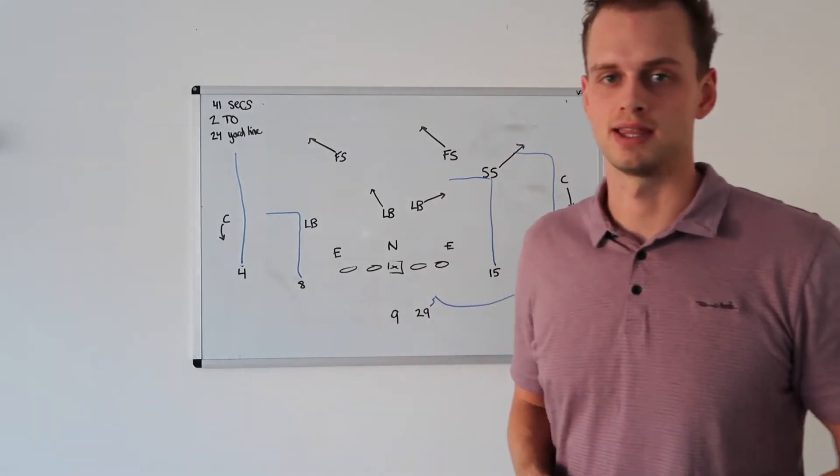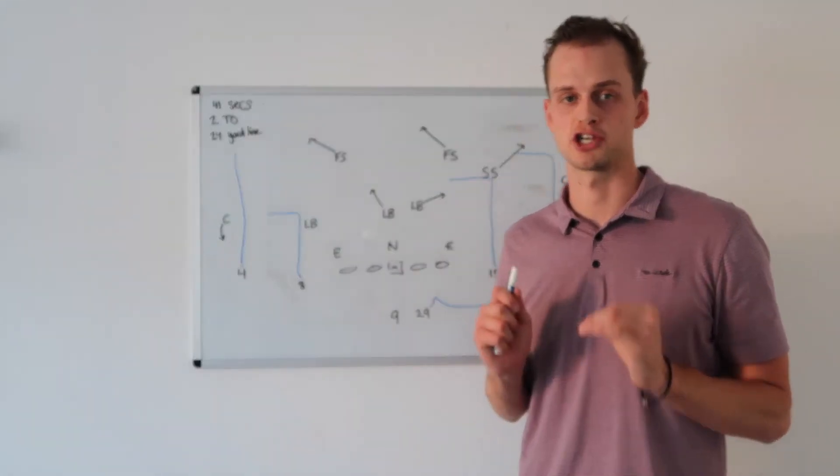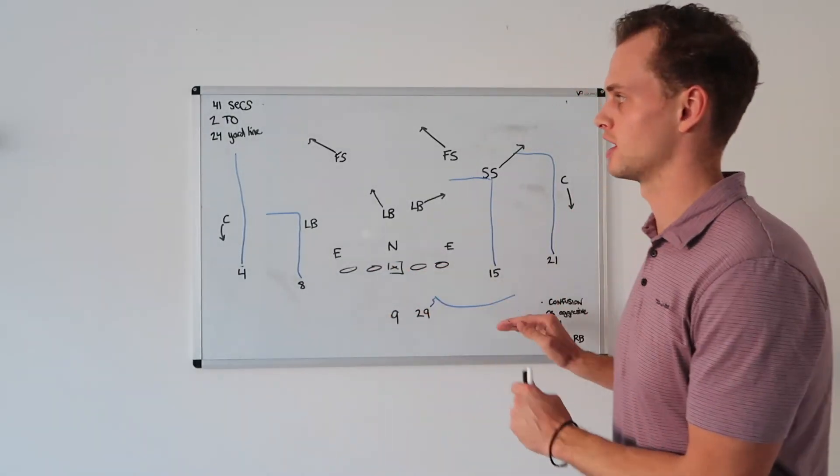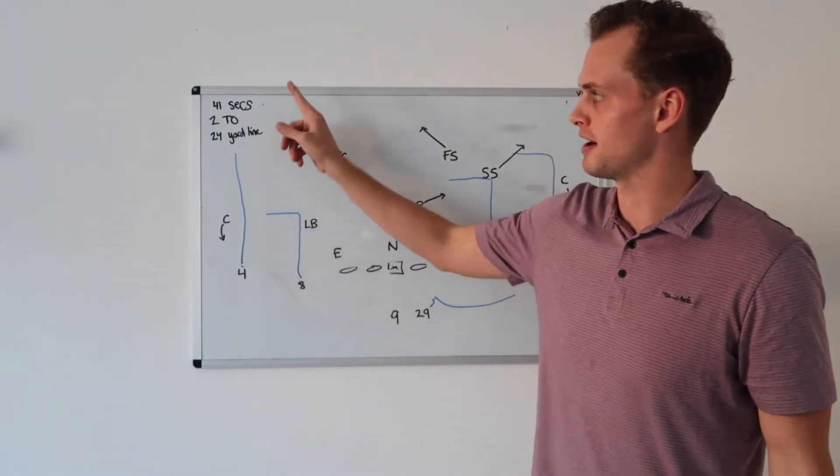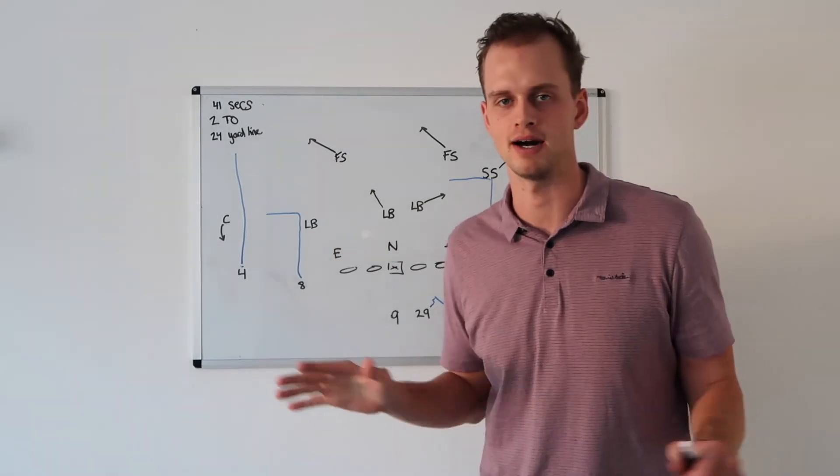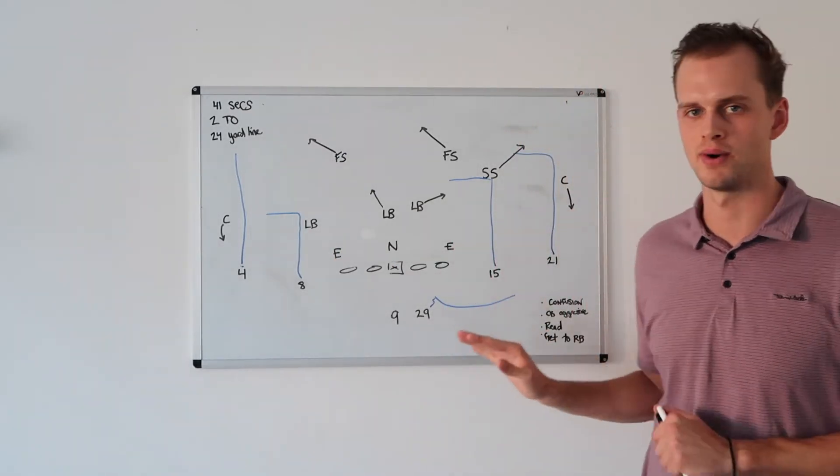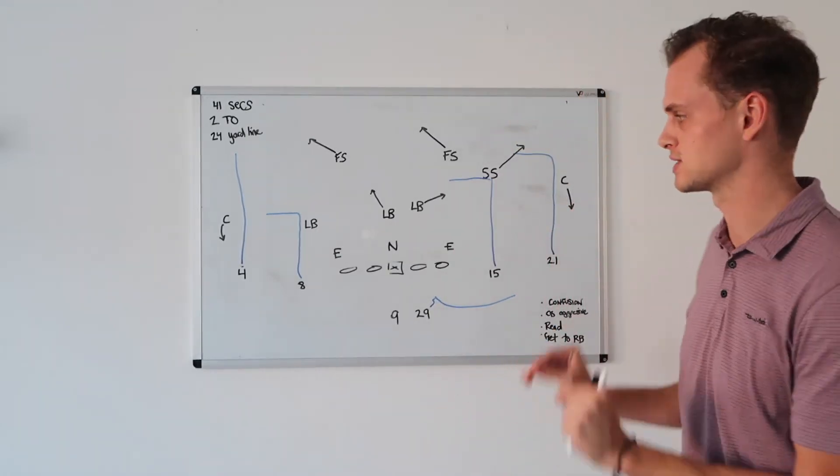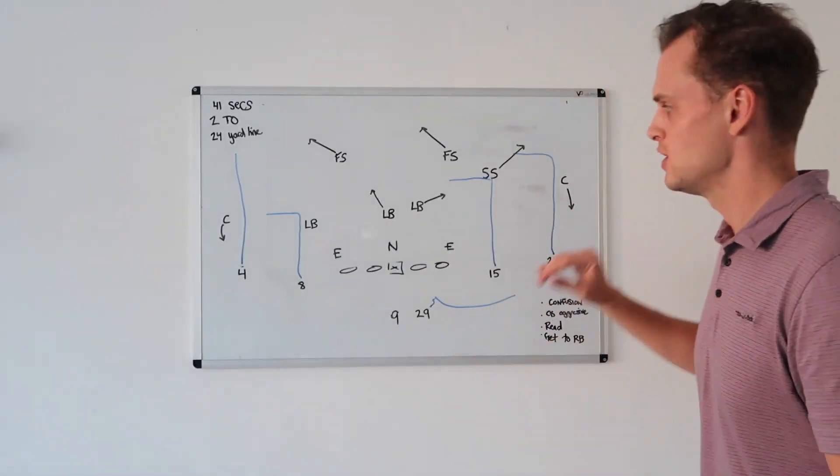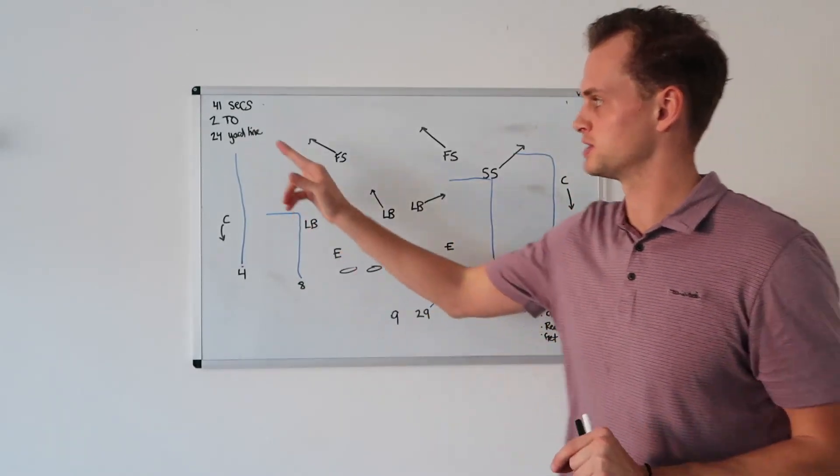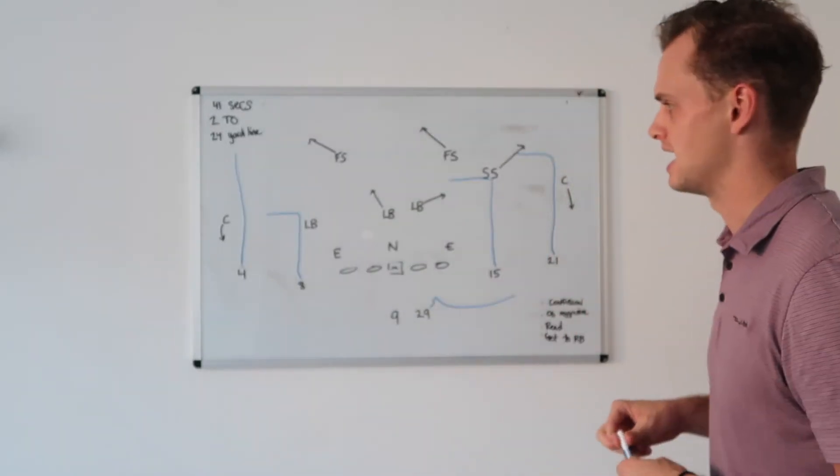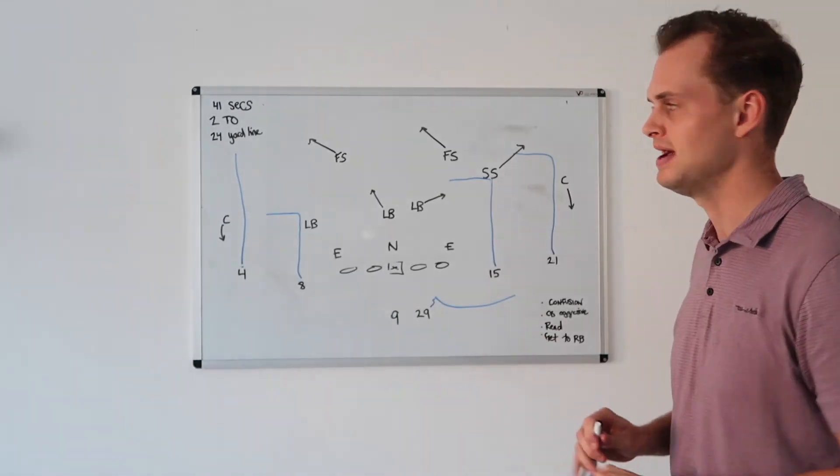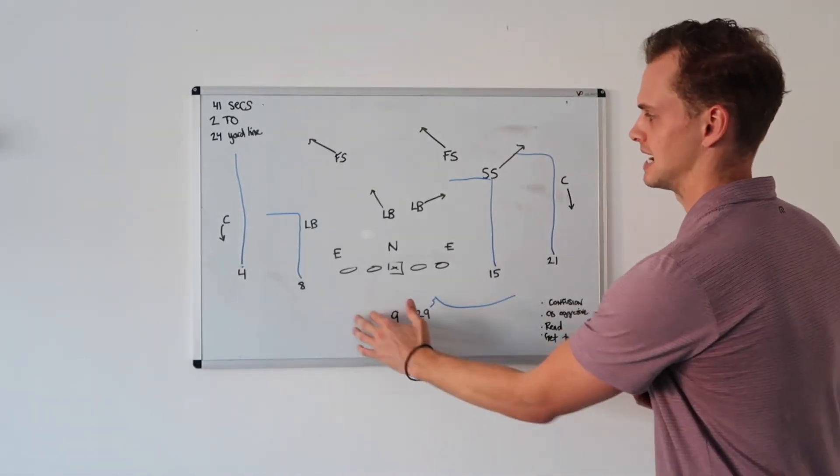Alright. So Keaton gets away with one right there. That should have been an interception. That should have lost you the ball game and been a costly mistake. Which leads me to my first point. If you're Keaton Slovis, now you're on the 24-yard line. You've got 41 seconds. You've got two timeouts. That's an eternity. You're not in a rush, and you're in field goal range. You just cannot make a costly mistake. Do not throw an interception. Protect the ball because you're in field goal range.